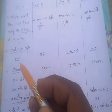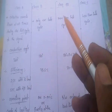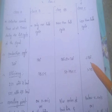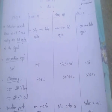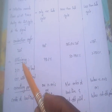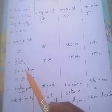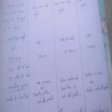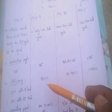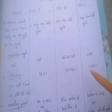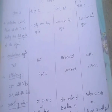The conduction angles are: Class A — 360 degrees; Class B — 180 degrees; Class AB — 180 to 360 degrees; Class C — less than 180 degrees. Efficiency: Class A is 25% with resistive load and 50% with transformer load; Class B is 78.5%; Class AB is 50 to 78.5%; Class C is greater than 78.5%.